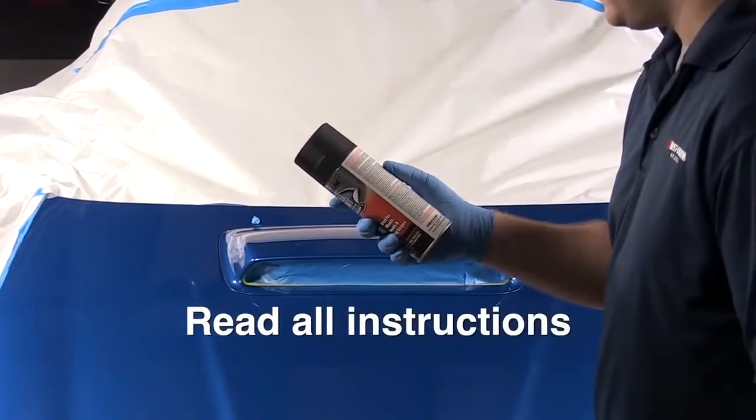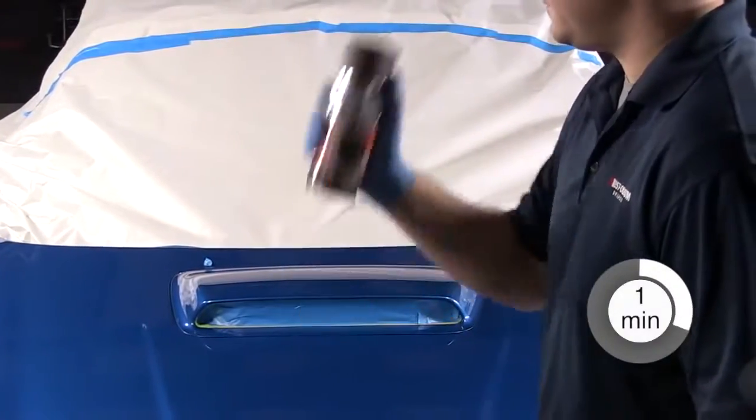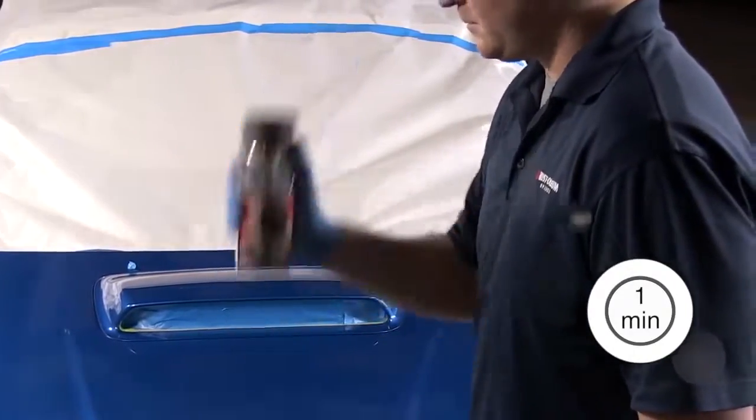Before you begin to apply Peel Coat, shake the can vigorously for one minute after the mixing ball begins to rattle.